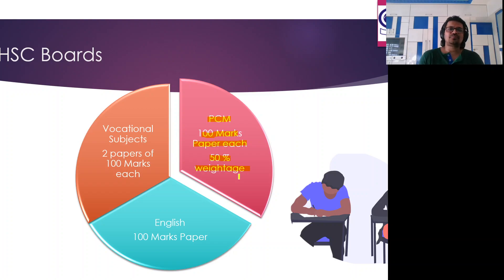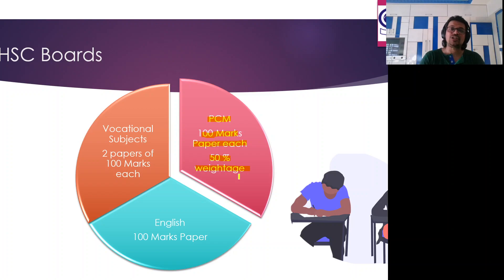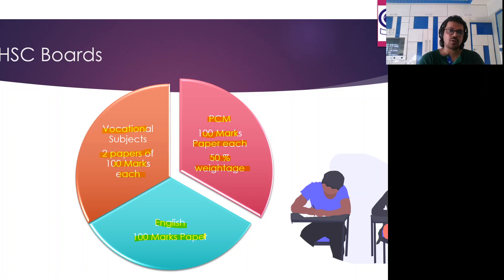At least 85 to 90 percent is what you should try to score, because if your PCM concepts are good and your HSC PCM is 90 and above, then correspondingly, whichever entrance exam you give, you'll perform better. 50 is the eligibility — please catch that word. If you're taking bifocal, you have two vocational papers of 100 marks each plus English at 100 marks. For the biology track, you'll have PCM, bio at 100 marks, English at 100 marks, and a second language — totaling 600 marks.